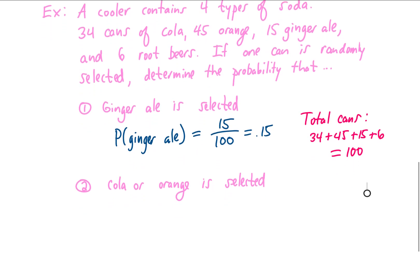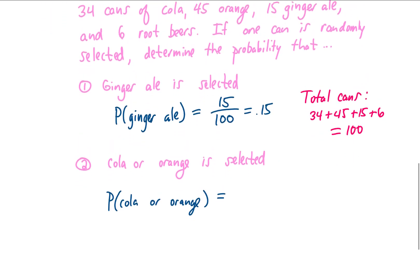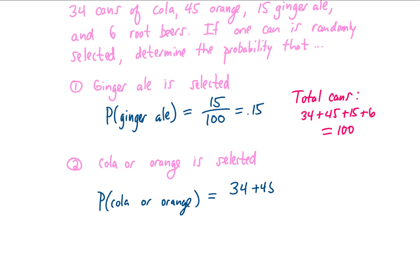We could also ask what is the probability of selecting a cola or an orange. Going back up to our list here, it looks like there are 34 possible colas, and there are 45 possible orange sodas. So the number of ways to get a cola or an orange soda is the sum of those two possibilities. We're going to divide those possibilities by the total number of possible drinks, which is 100, and we're getting 79 over 100, or a probability of 0.79.